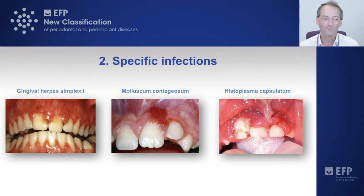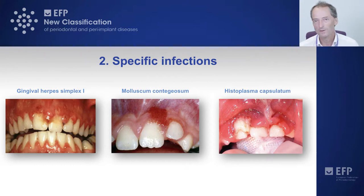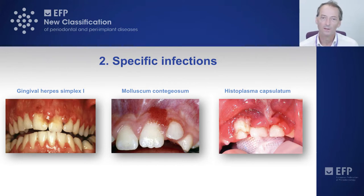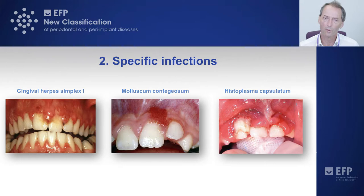Group two are the specific infections, which are very common. The first example shows gingival herpes simplex 1 in an adult, though it normally presents within the first two years of life. The ulceration is very different from necrotizing ulcerative gingivitis — the ulcers affect the marginal gingiva and are very shallow, ragged, and serpiginous in nature. The patient presents with pain and discomfort, which is not what you would expect from a chronic plaque-induced gingivitis.